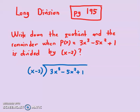What do they want? Quotient and remainder. So we have 3x³ - 5x² + 1 divided by x - 2. This is long division approach. How can I subtract 3x³? I must multiply with 3x². So 3x² times x will give me 3x³, and then 3x² times -2 gives me -6x².